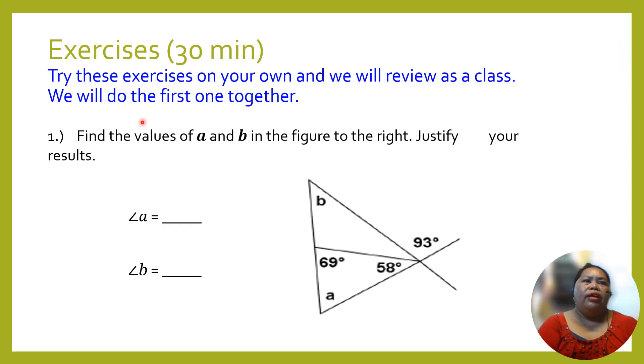Alright, so let us try this exercise on our own and we will review as a class. We will do the first one together. Find the value of a and b in a figure to the right. Justify your result. Now how are we going to solve this? If we are going to take this triangle, we know that the total is 180 degrees.